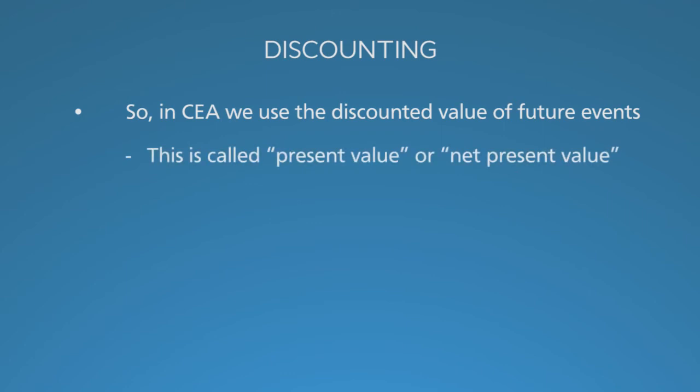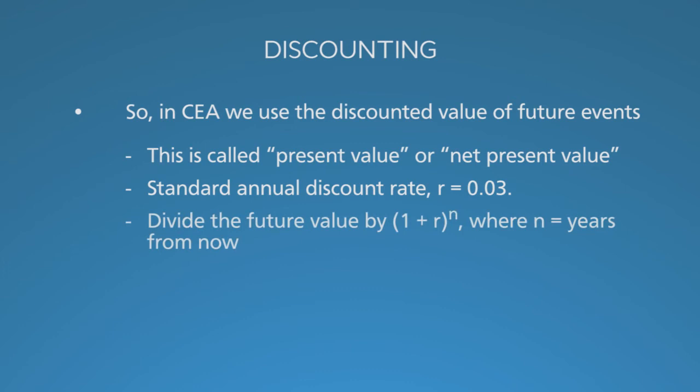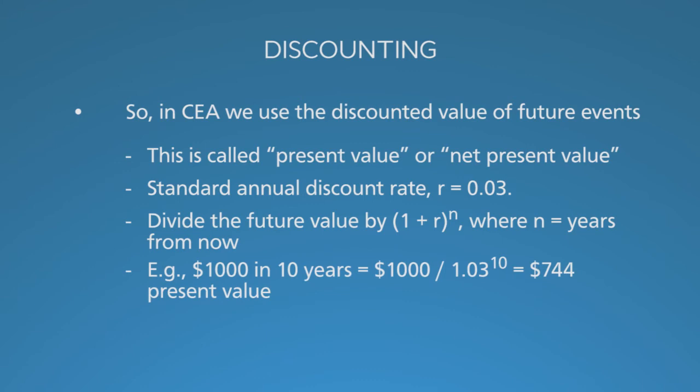We calculate present value using a standard annual discount rate, typically 3%. The math is simple: the future value divided by 1 plus the discount rate to the power n, which is the number of years into the future. Thus, $1,000 in 10 years equals $744 in present value. That's all there is to discounting, except for a few practical details.